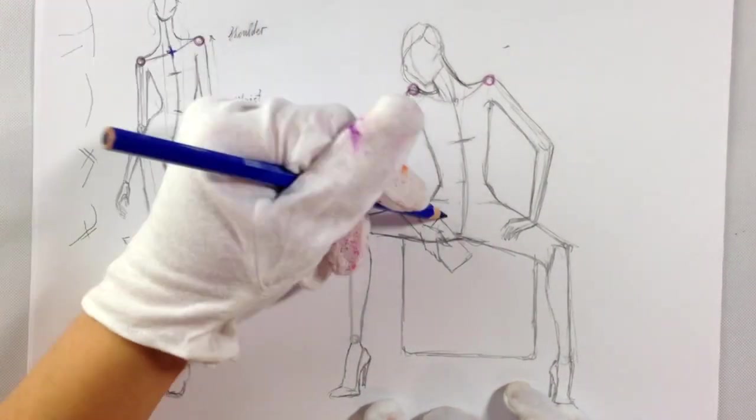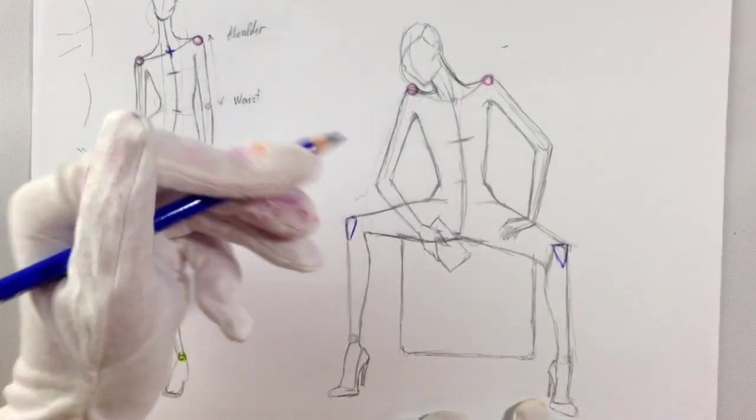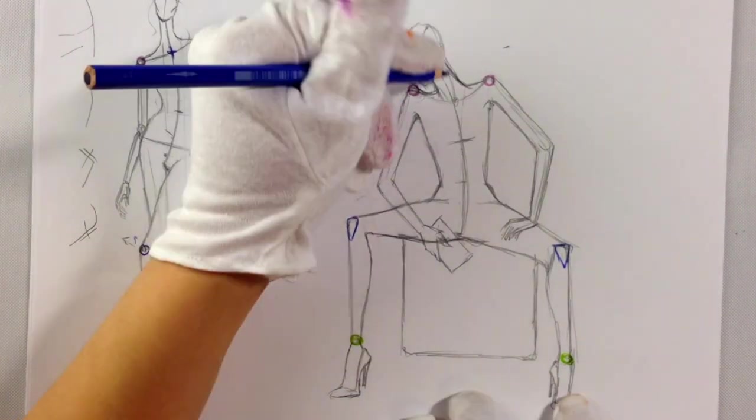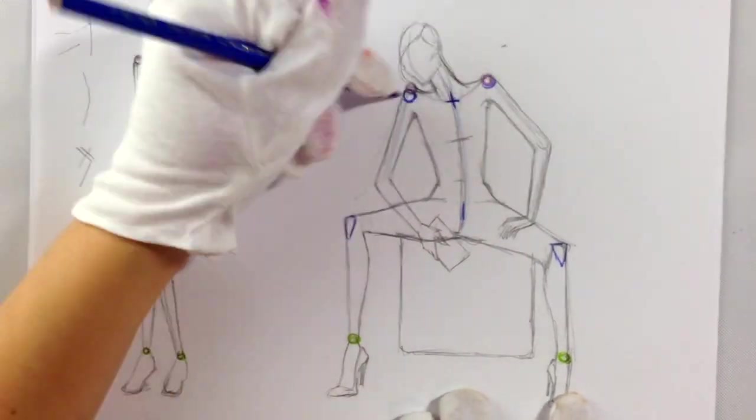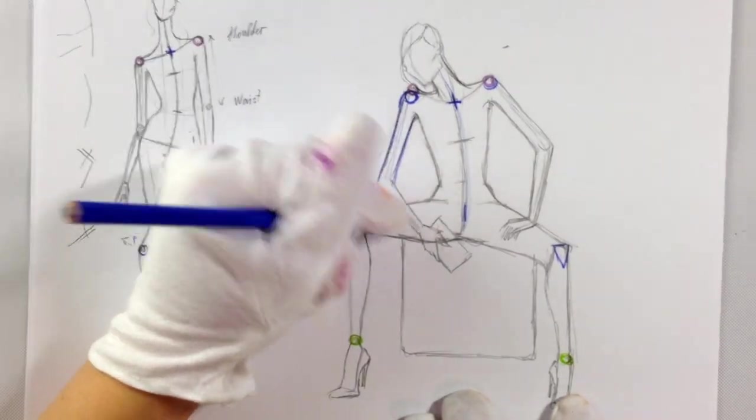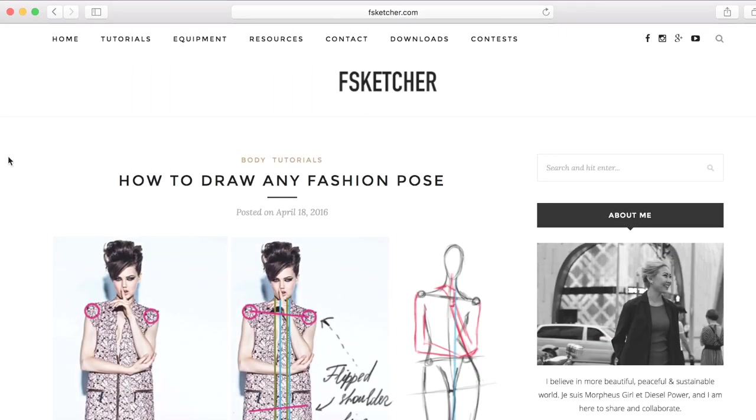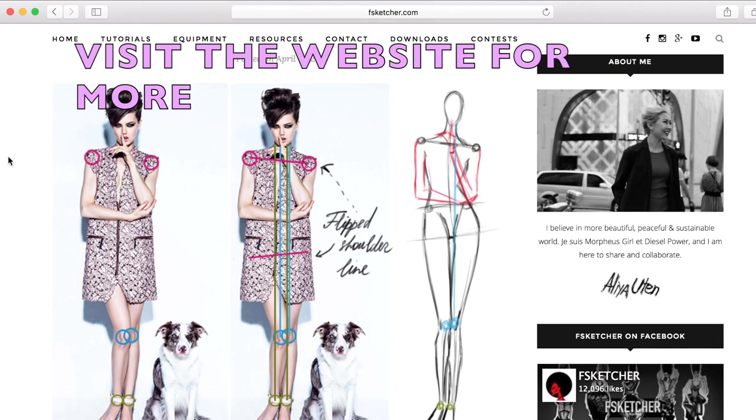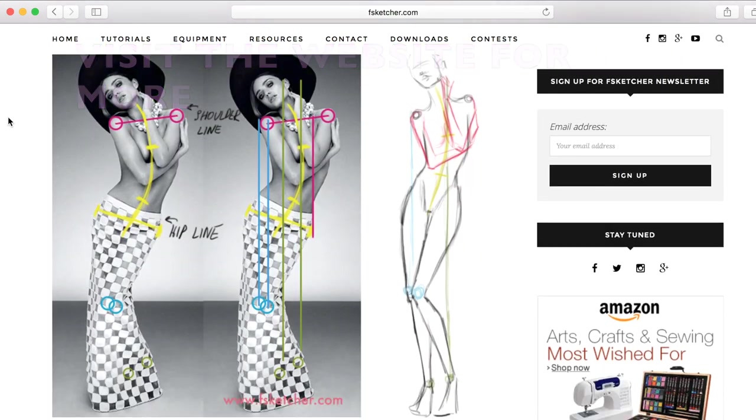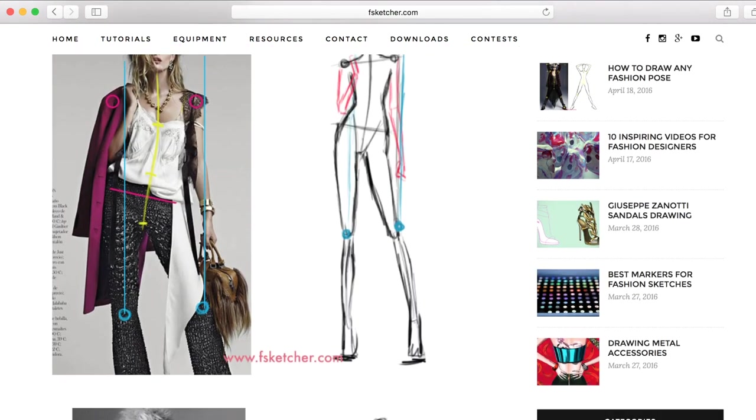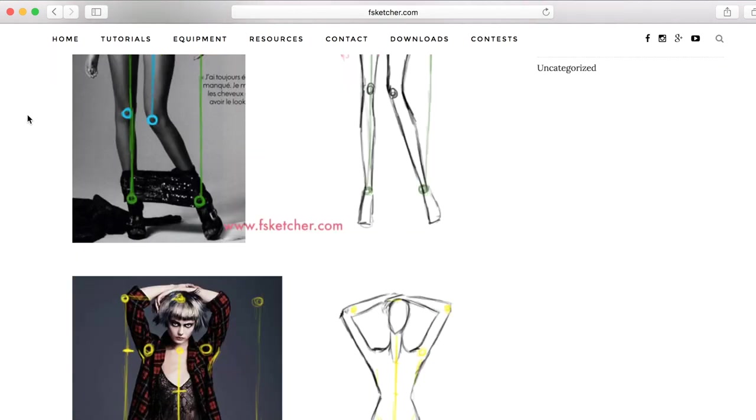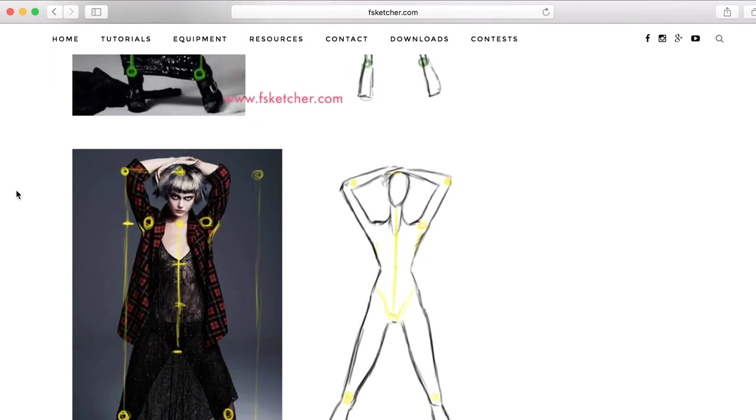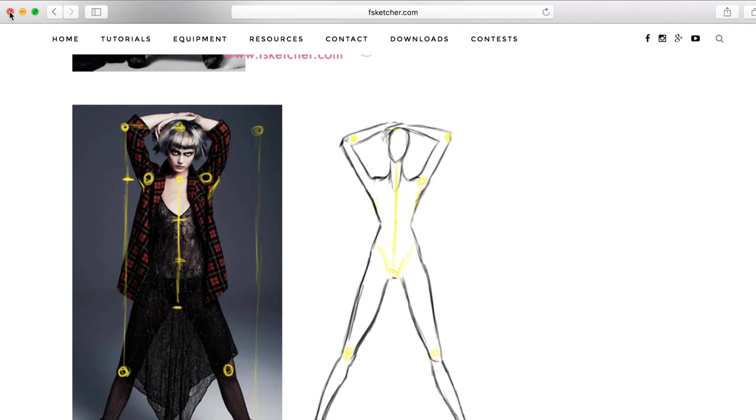Okay, so almost done with this tutorial. Actually, it's third part of how to draw any fashion pose series, where I'm teaching to use specific elements to analyze reference image, and just to repeat the pose on your own sketch. I hope you enjoyed this tutorial. Subscribe to F-Sketcher channel, like it on Facebook, follow on Instagram, write your suggestions in the comment section below, and see you next tutorial.